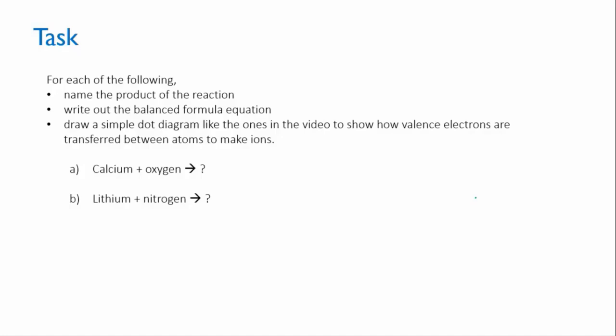And then finally, like we did earlier in the video, draw some simple dot diagrams that show how the valence electrons are transferred between one reactant and the other to make the ions of the final product.